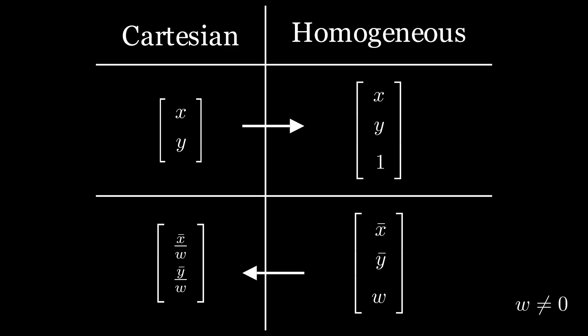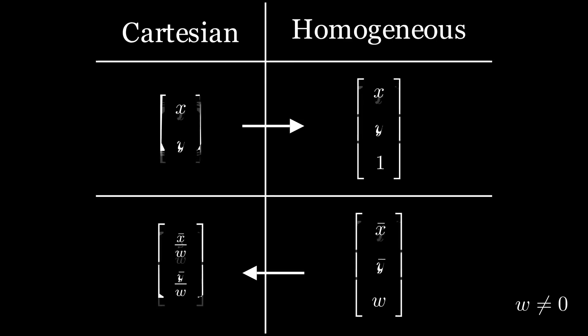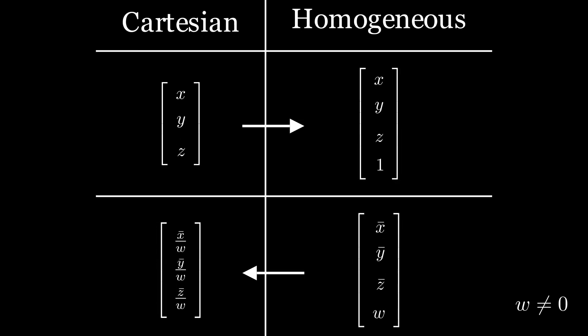Therefore, w cannot be equal to 0 when we are converting to Cartesian coordinates. Similar steps apply for 3D and higher dimensions as well.